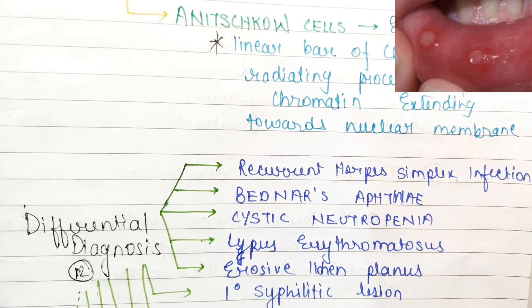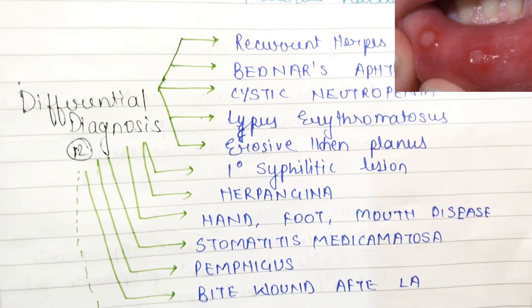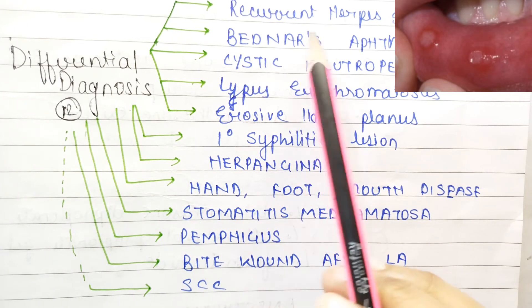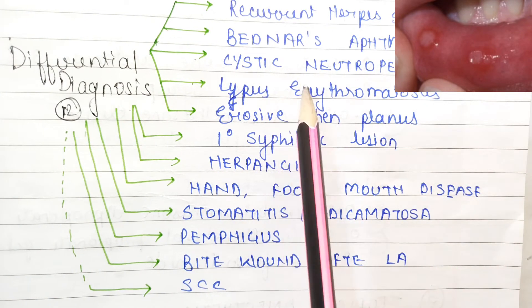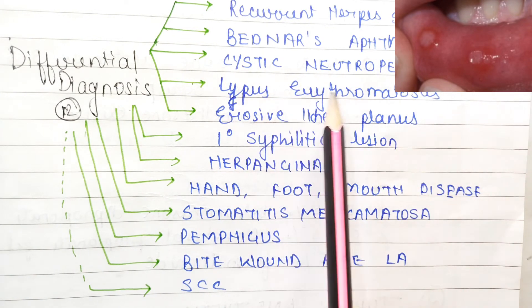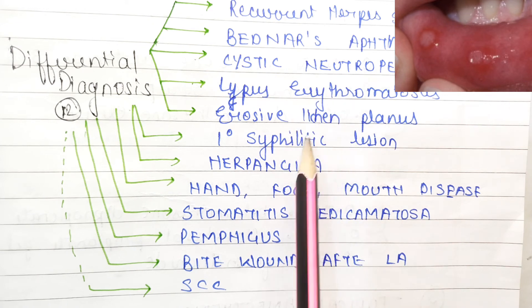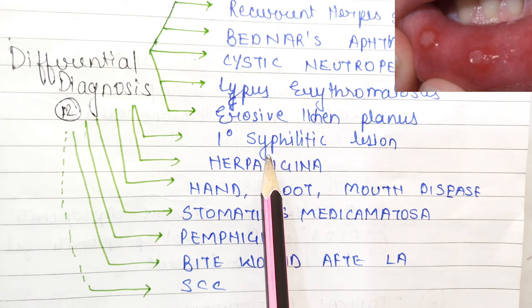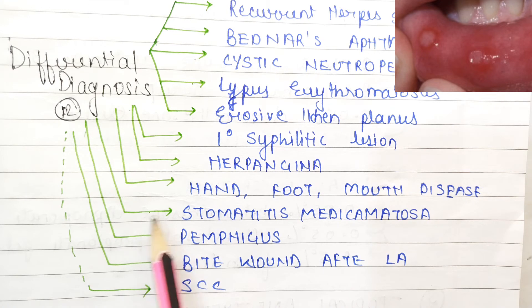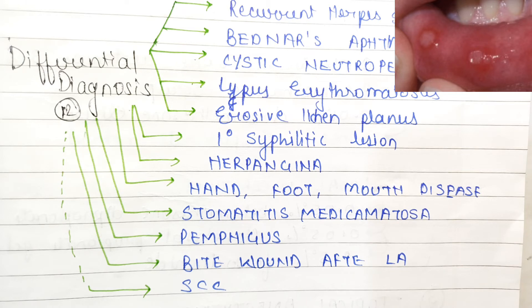Coming to differential diagnosis, there are 12 differential diagnoses: recurrent herpes simplex infection, Bednar's aphthae, cyclic neutropenia, lupus erythematosus, erosive lichen planus, primary syphilitic lesion, herpangina, hand foot mouth disease, stomatitis medicamentosa, pemphigus vulgaris, bite wound after local anesthesia, and squamous cell carcinoma.